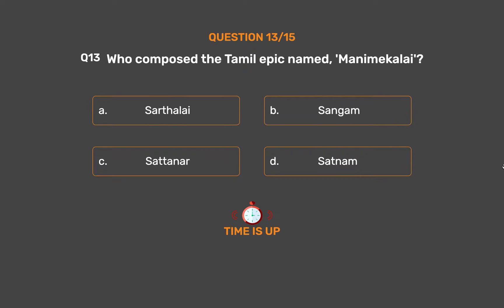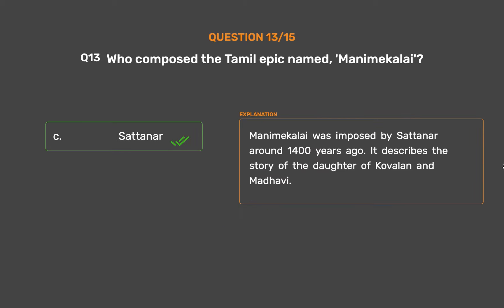The correct answer is Option C: Sattanaar. Manimeklai was composed by Sattanaar around 1400 years ago. It describes the story of the daughter of Kovalan and Madhavi.